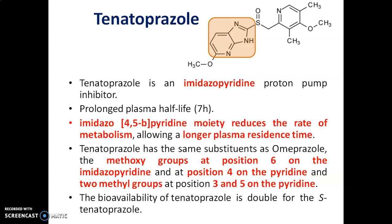The last drug in this category is tenatoprazole. Tenatoprazole is an imidazopyridine proton pump inhibitor with a plasma half-life of 7 hours. Due to the presence of the imidazopyridine moiety, the rate of metabolism is reduced and there is a longer plasma residence time. It has two methoxy groups — one at position 6 on the imidazopyridine ring and the other at the 4th position of the pyridine ring — and two methyl substituents at positions 3 and 5 of the pyridine ring. The bioavailability of tenatoprazole is double that of F-tenatoprazole.